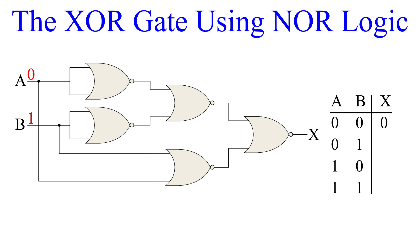Next, input A=0 and B=1. In the first section, both inputs get inverted, so the output of the top NOR is one and the output of the bottom NOR is zero. In the middle section, the top NOR has inputs zero and one — output is zero. The bottom NOR has inputs A and B, which are zero and one respectively — this NOR will also output zero. So the last NOR gate has two inputs of zero, which will output a one. So with inputs A=0 and B=1, the output is one.